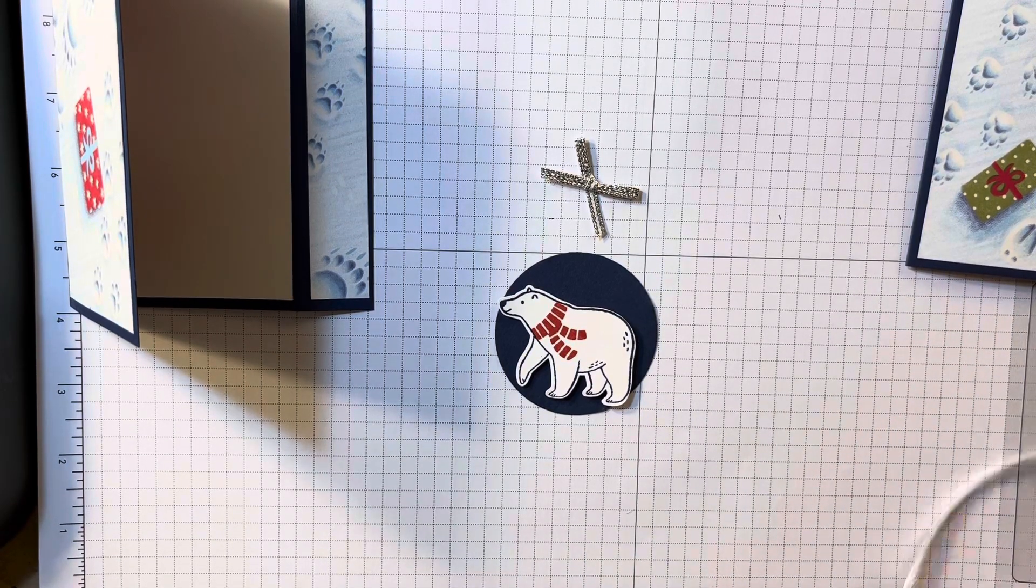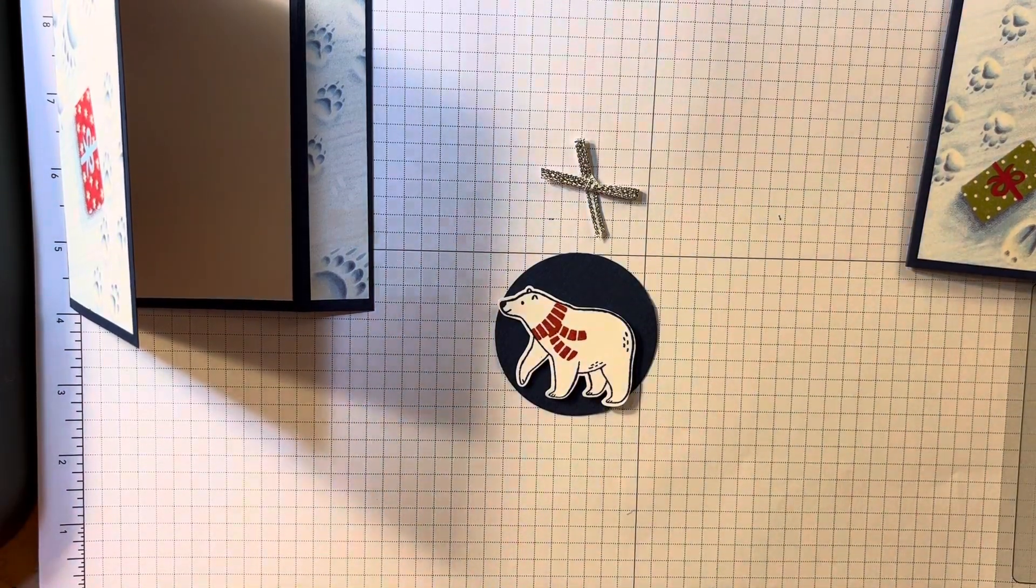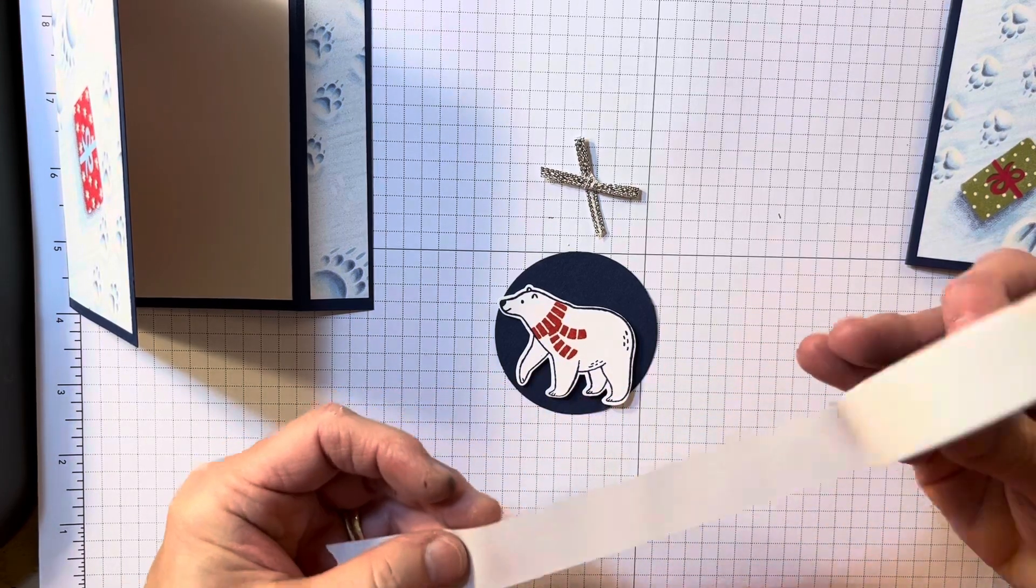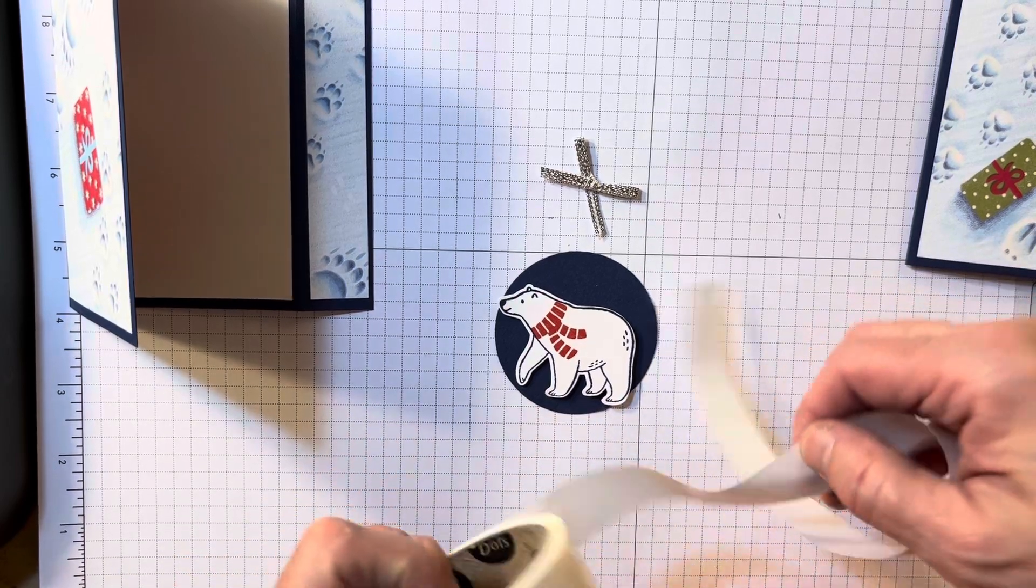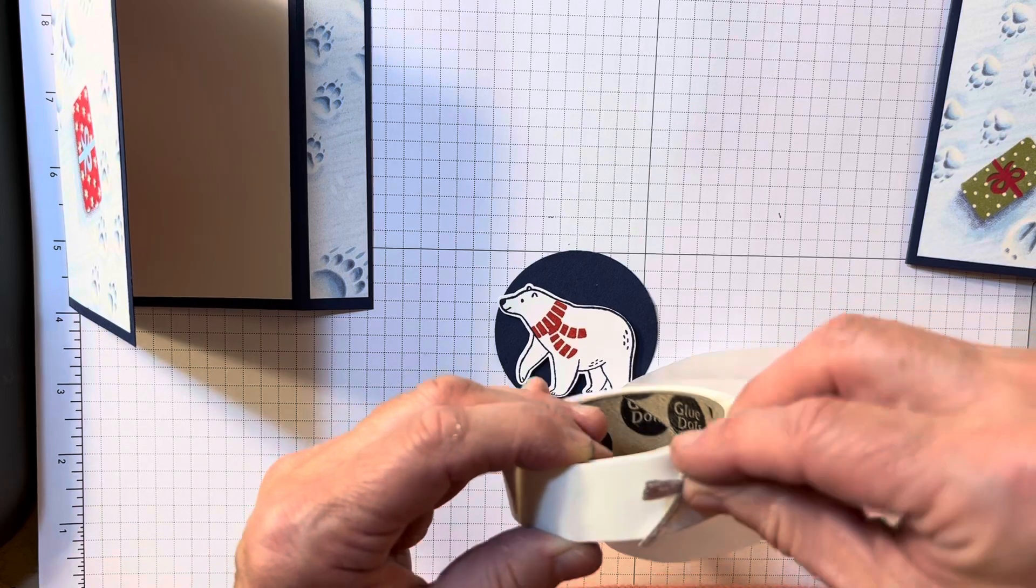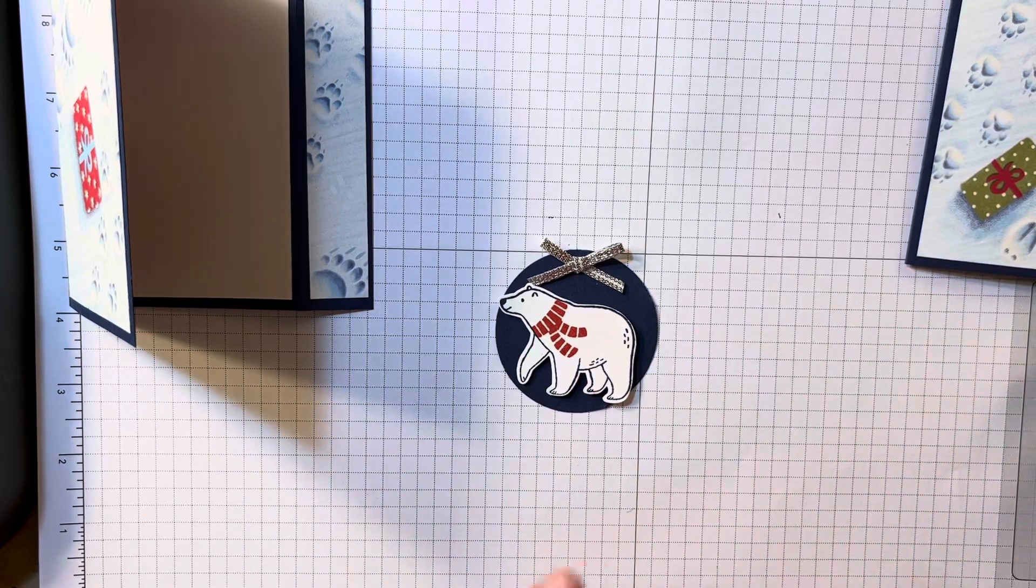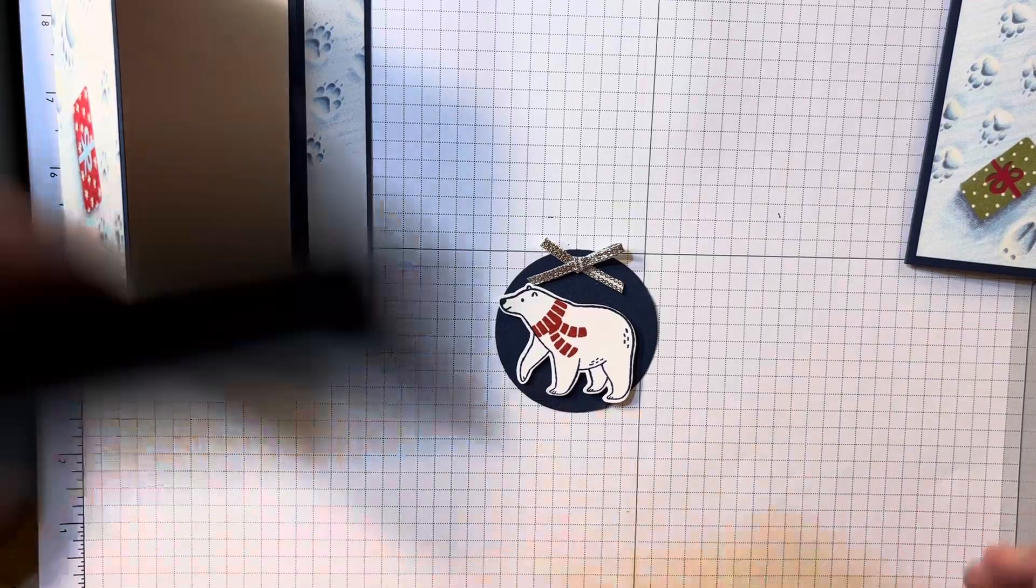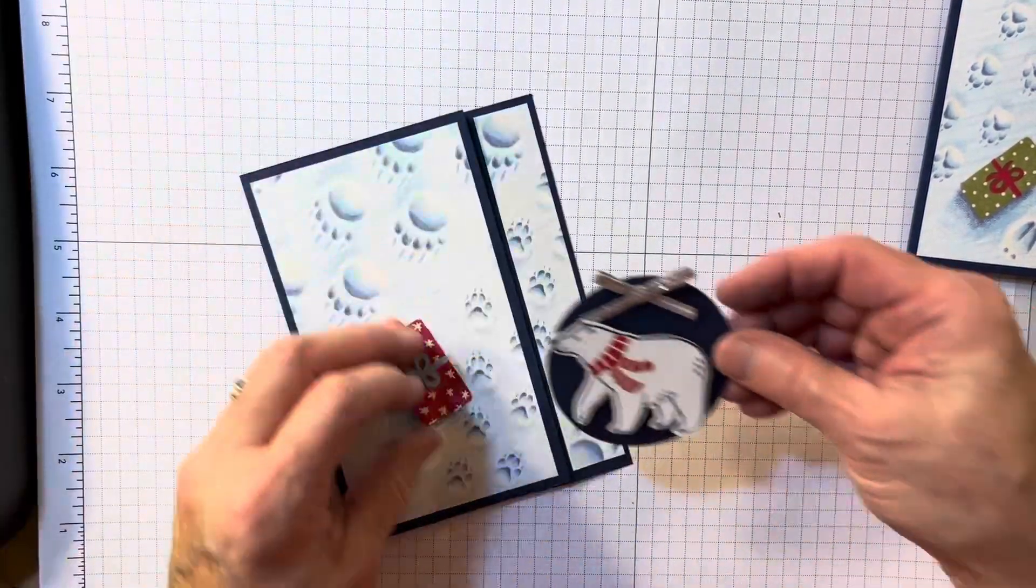And what I'm going to do is I'm going to take a glue dot and I'm going to find where the glue dots are. There they are. Put the bow right on top of the glue dot to adhere it. Just add it up here. Just cute. Adds a little bit of something. But it's not a ton.